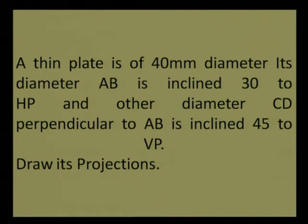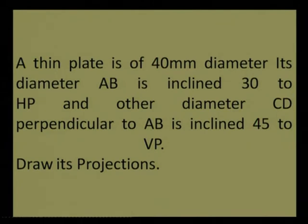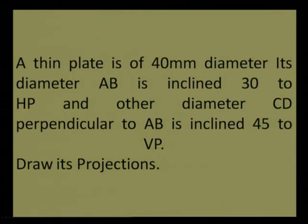The next problem: a thin plate of 40mm diameter — its diameter AB is inclined 30 degrees to the HP and another diameter CD is perpendicular to AB and inclined 45 degrees to the VP. We need to draw the projections. This is about projections of a plane. We take an XY line and draw a circle of 40mm diameter below the XY line.